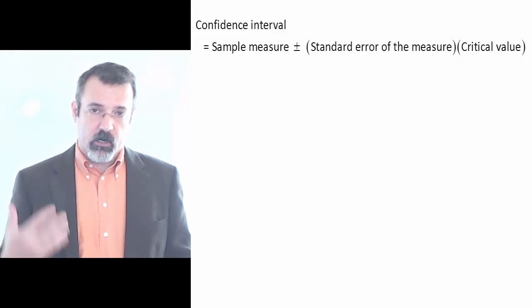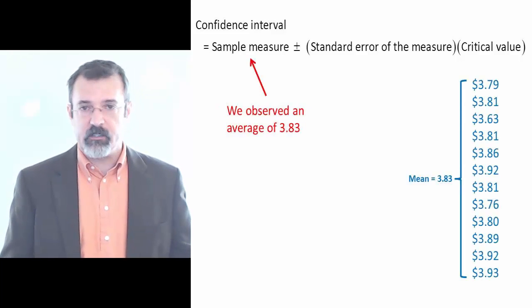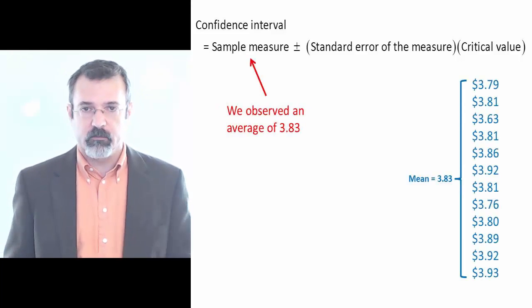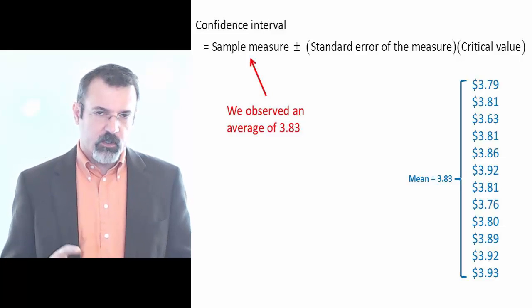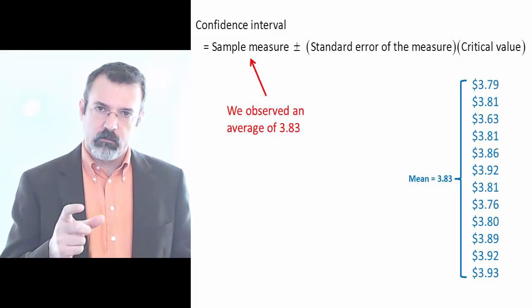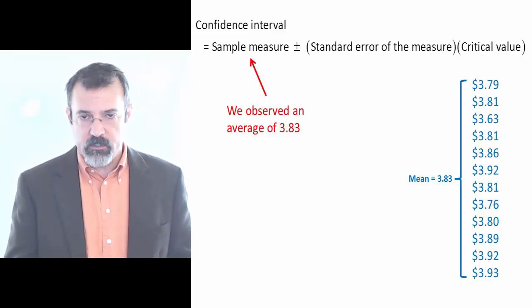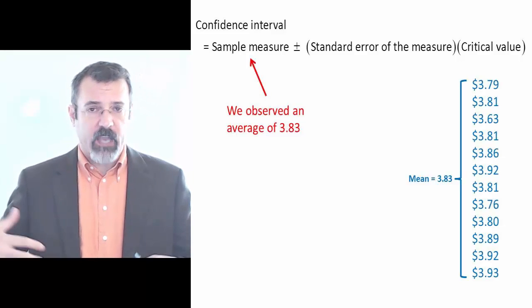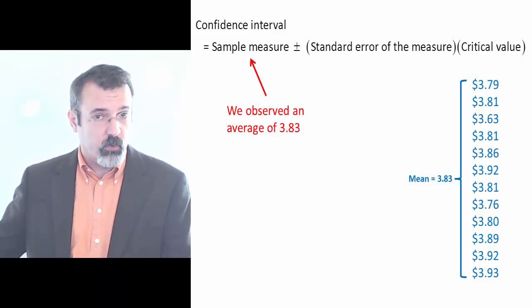Our sample measure is the average of the 12 prices that we observed, or $3.83. The standard error of the measure depends on whether we're building a confidence interval for the price of gas at a single station or a confidence interval for the average price of gas at a set of 12 stations.